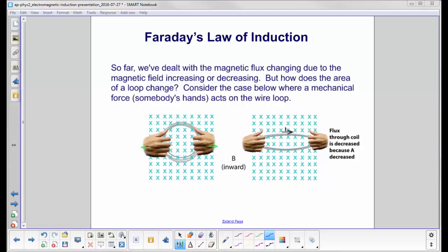So far we've dealt with the magnetic flux changing due to the magnetic field increasing or decreasing. But how does the area of a loop change? Well, look at the case below.